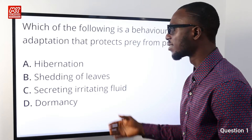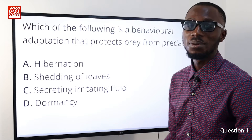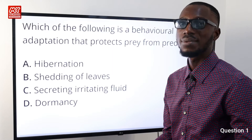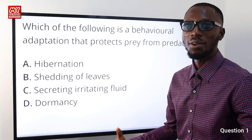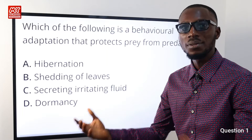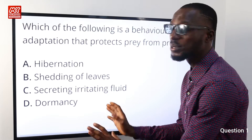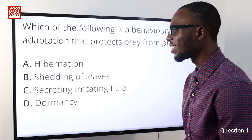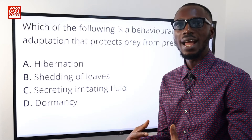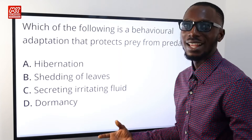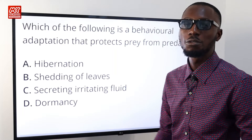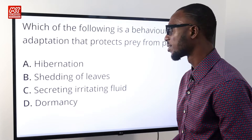Option C is secreting irritating fluid. A very good example is the honey badger, and also the bombardier beetle — they secrete fluid that may be toxic or hot, which repels predators from them. Option D is dormancy, which is similar to hibernation, whereby a particular seed stays alive by being less active. Going through our options, option C is very correct: secreting irritating fluid to repel predators is a behavioral adaptation. So option C is correct.